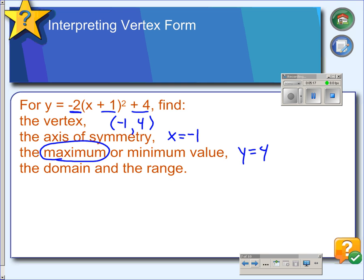So if we were to graph this function, we would have a vertex at negative 1, 4, right there. And then the negative 2 tells us that the function is going to stretch, and it's going to flip over, so it's going to go upside down. We're going to get a graph that looks like this.